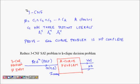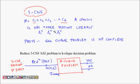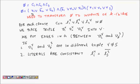Now we will reduce the 3-CNF problem, which is already known to be NP-complete, to the k-Clique problem. 3-CNF is a circuit satisfiability problem where you have k clauses: a formula φ = C1 ∧ C2 ∧ … ∧ Ck, and in each clause there are three literals joined by OR. So each clause Cr has the form l1r ∨ l2r ∨ l3r.